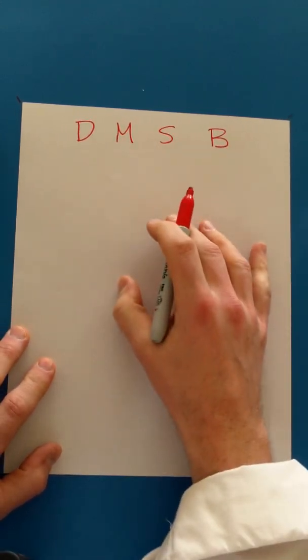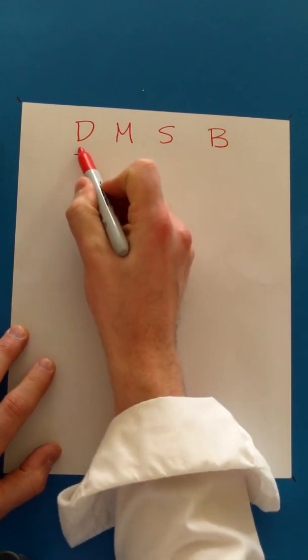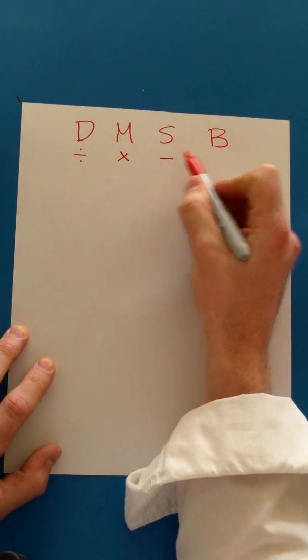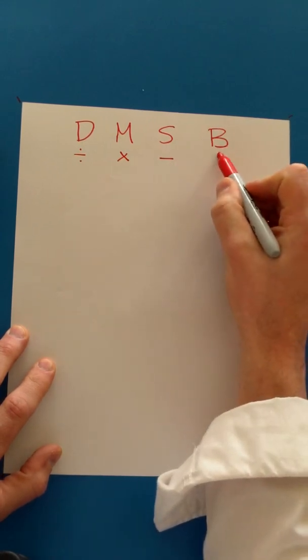These are the steps I'm going to follow when I'm solving a long division question. D stands for divide, M multiply, S subtract, and B bring down.